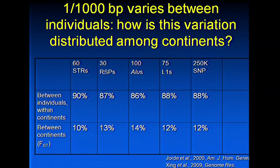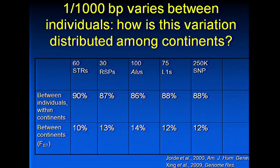If we look at FST for human populations across different kinds of loci — short tandem repeats, ALU insertion polymorphisms, L1 insertions, and a 250K SNP chip — very consistently, roughly 90% of variation is found between individuals within the major continents, and only about an extra 10% is seen between continents. If we assessed diversity only in Europe, we would have 90% of the diversity in the entire world. Most variation occurs between individuals within populations.